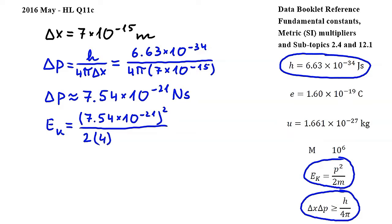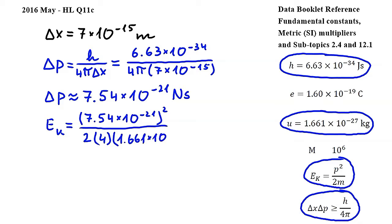There are 4 nucleons in the alpha particle, and the mass of each nucleon is equal to the unified atomic mass, which can be found in the fundamental constant section of the data booklet, and which is equal to 1.661 times 10 to the power of negative 27 kilograms. Carrying out this calculation, we get approximately 4.3 times 10 to the power of negative 15 joules for the kinetic energy.